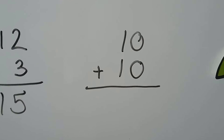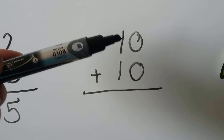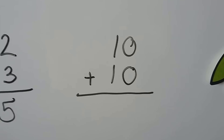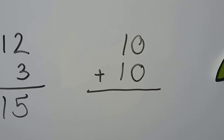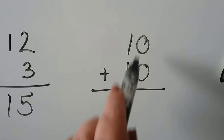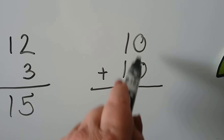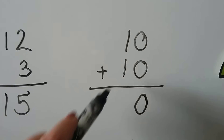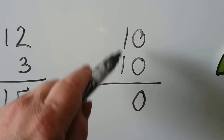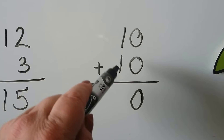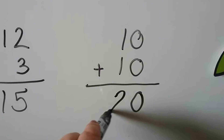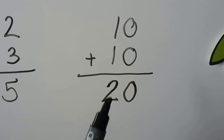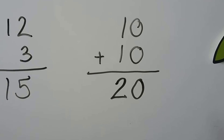10 plus 10 — we have 2 tens. We can add the numbers in the ones place: 0 plus 0 is 0. We can add the numbers in the tens place: 1 plus 1 is 2. 2 tens are 20. We have 2 tens and 0 ones.